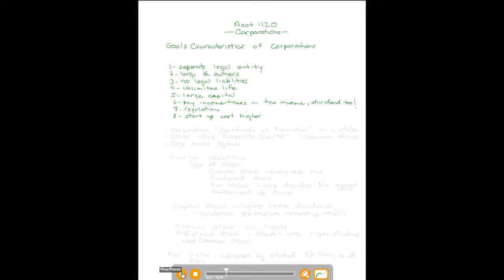Consider this. A corporation begins by filing what is called a certificate of formation in a state where they want to domicile. So they have a state of residence. And then the state, that's the first thing that happens, and then the state will issue a charter to the corporation. It's called a corporate charter.